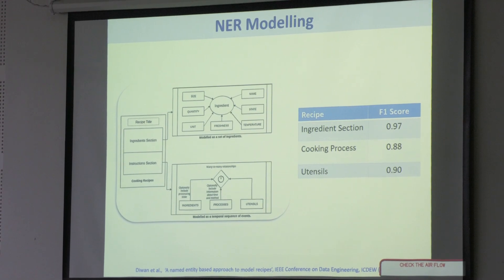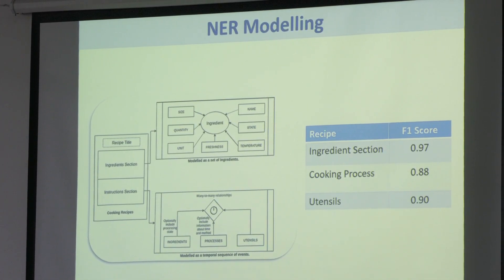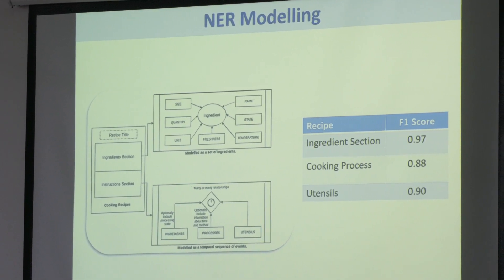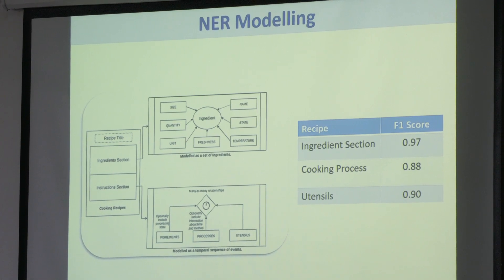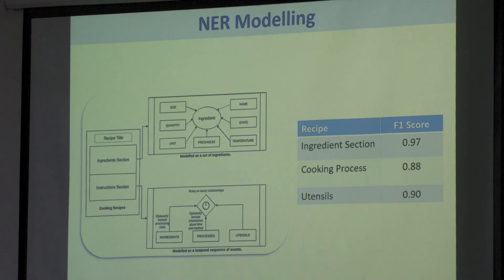A recipe is a structured text with a variety of named entities such as size, quantity, unit, name, state, and temperature in the ingredient section. In the instruction sections, we have ingredients, processes, and utensils. To extract these named entities, we used the RecipeDB dataset — we manually tagged some named entities of the recipes and then trained our natural language processing model. We achieved state-of-the-art performance with our NLP model in the context of recipe text, and also built language models for text generation with named entities. This work has been published at COLING, a well-known conference in natural language processing.